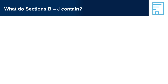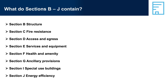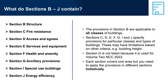What do Sections B to J contain? While the different sections provide performance requirements, verification methods and DTS provisions for specific design and building areas, they must be applied holistically — you need to consider the impact of a decision in one area on requirements in other areas. For example, formulating a performance solution to increase the prescribed distance of travel to an exit in Section D (access and egress) may affect the coverage requirements for firefighting equipment in Section E (services and equipment).